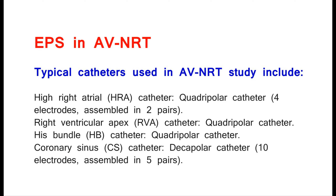The Right Ventricular Apex (RVA) catheter is a quadripolar catheter. The His Bundle (HB) catheter is also a quadripolar catheter. The Coronary Sinus (CS) catheter is a decapolar catheter with ten electrodes assembled in five pairs.